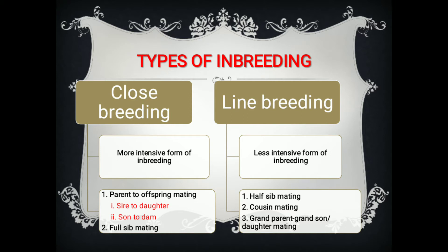In close breeding, parent-to-offspring mating is included — for example, sire to daughter and son to the dam. Full sib mating is also included in close inbreeding. Line breeding examples include half-sib mating, cousin mating, and grandparent to grandson or granddaughter mating.